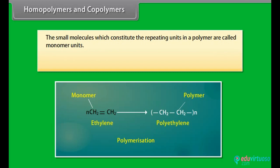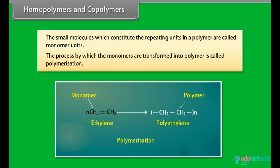The small molecules which constitute the repeating units in a polymer are called monomer units. The process by which the monomers are transformed into a polymer is called polymerization. For example, polyethylene is a polymer which is obtained by the polymerization of ethylene. The ethylene molecules are referred to as monomer units.